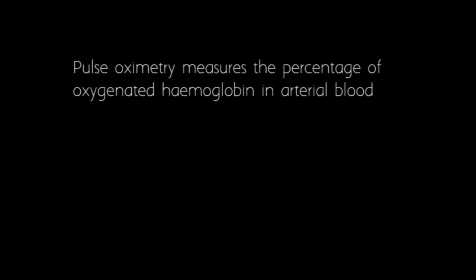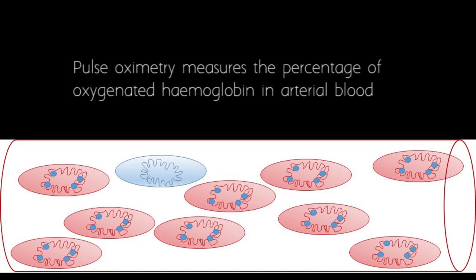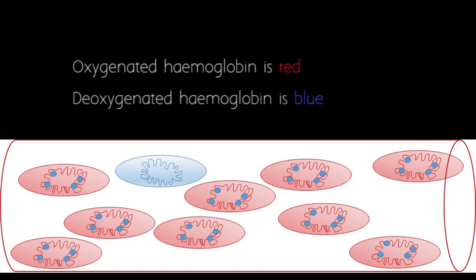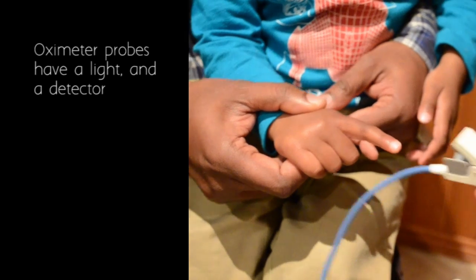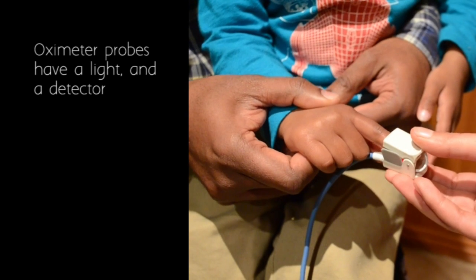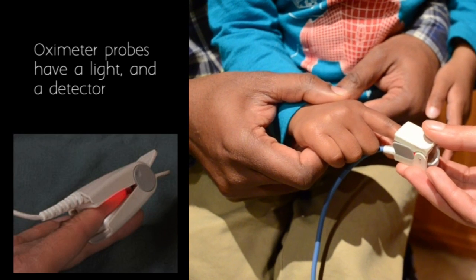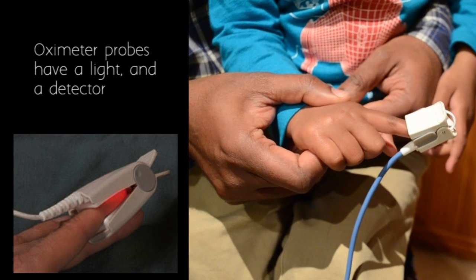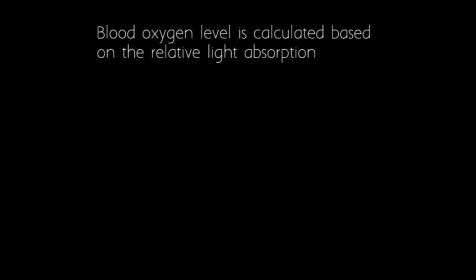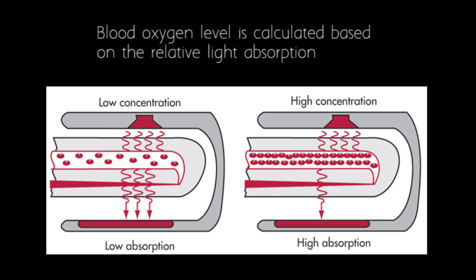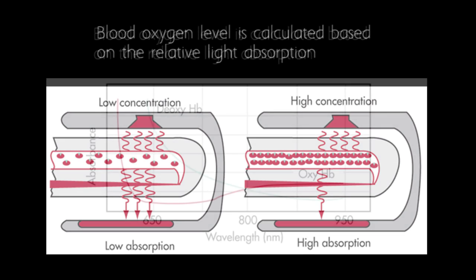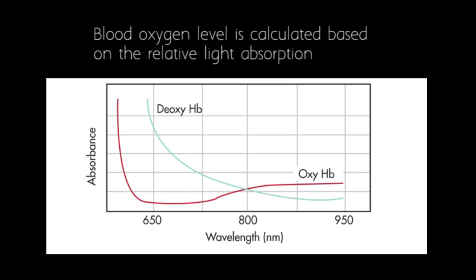Pulse oximetry measures the percentage of oxygenated haemoglobin in arterial blood. Oxygenated haemoglobin is red, while deoxygenated haemoglobin is blue. Inside the oximeter probe is a light which produces red and infrared light when placed on the patient. Opposite the light is a detector. Oxygenated and deoxygenated blood allow different amounts of light through, so the oximeter can calculate the blood oxygen level based on the amount of light transmitted.